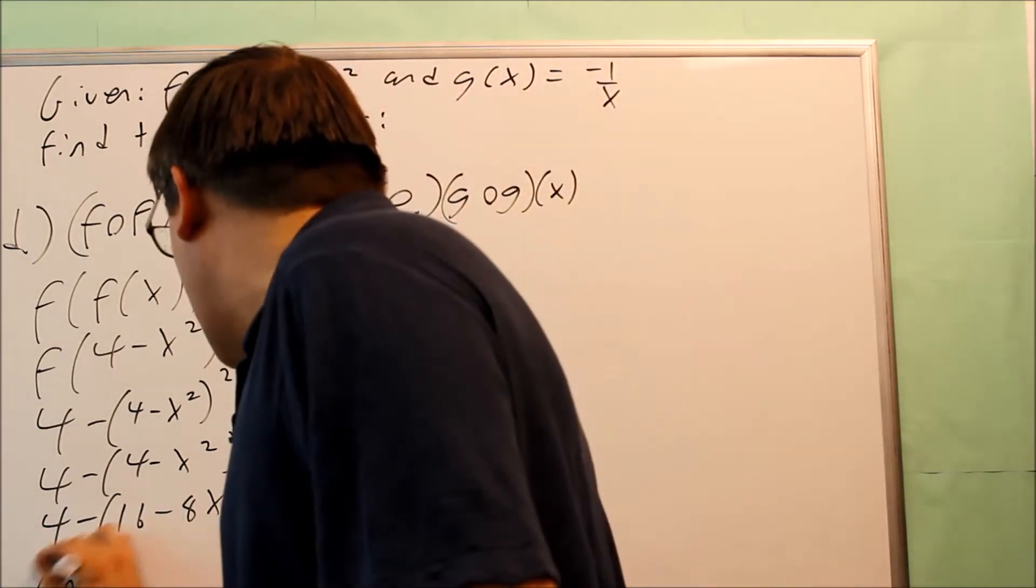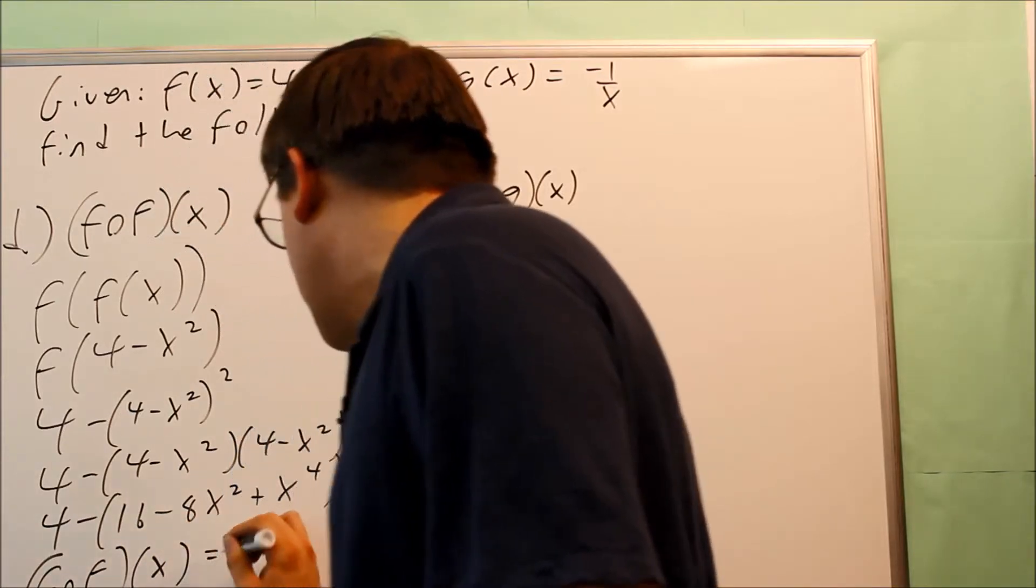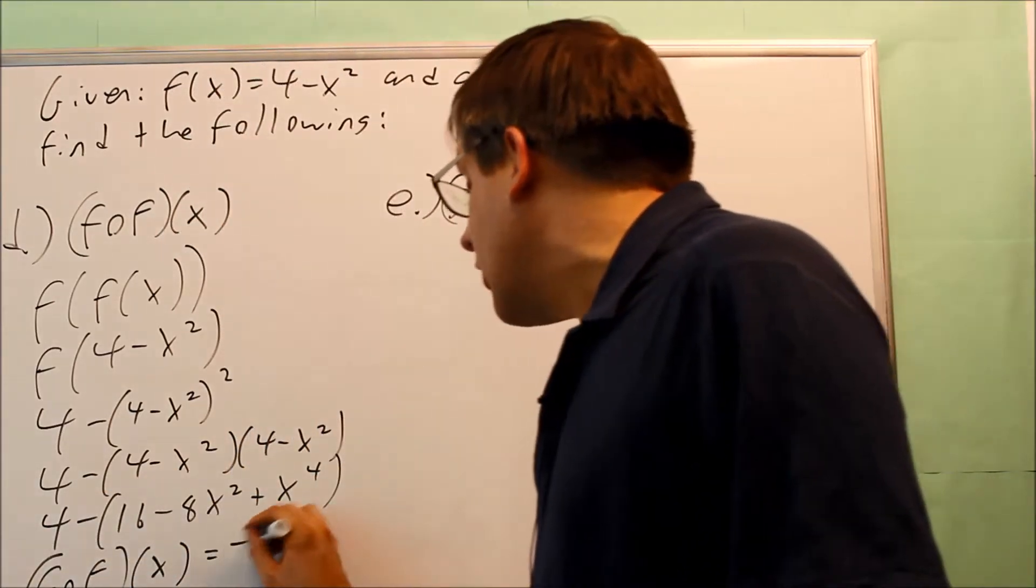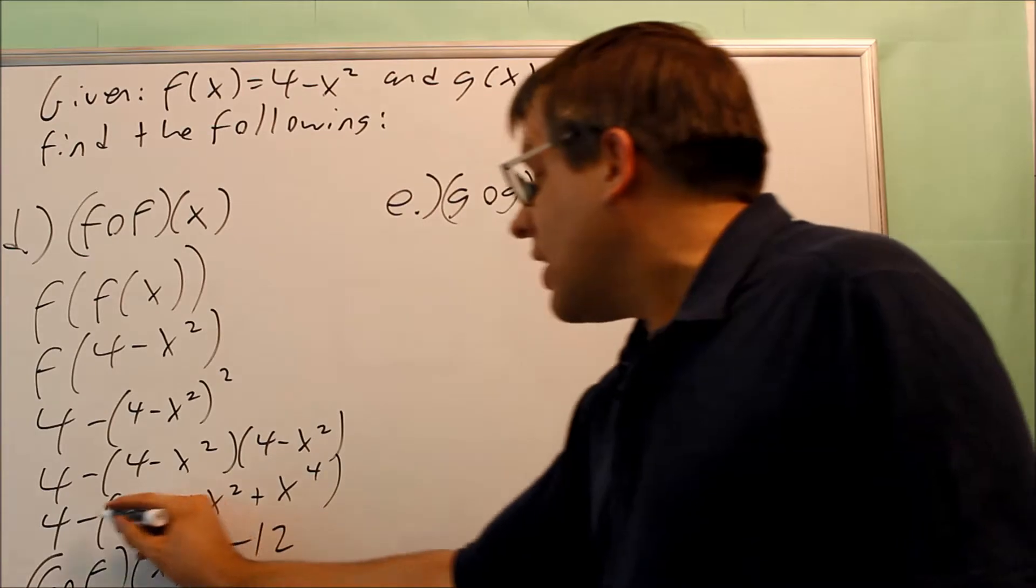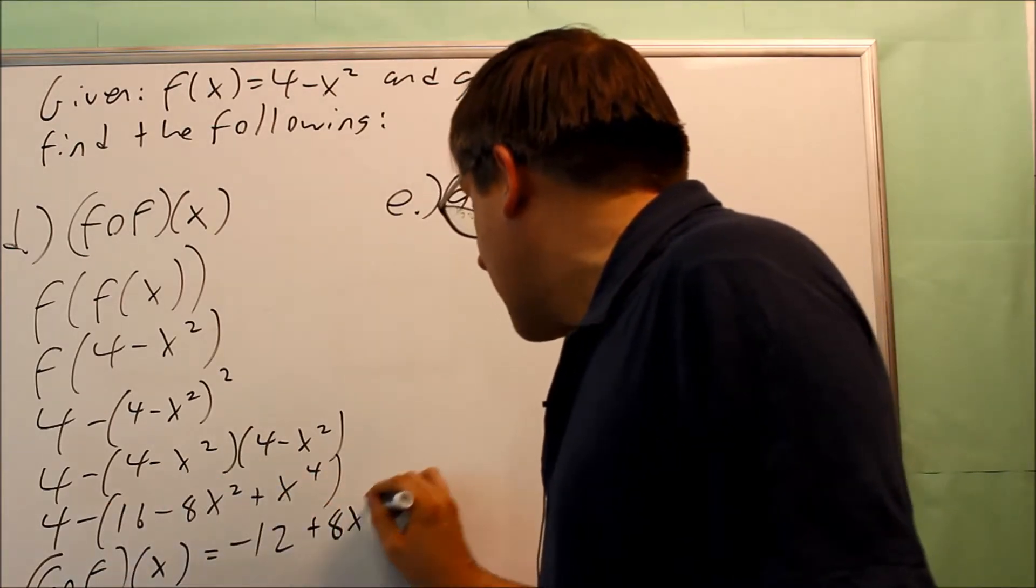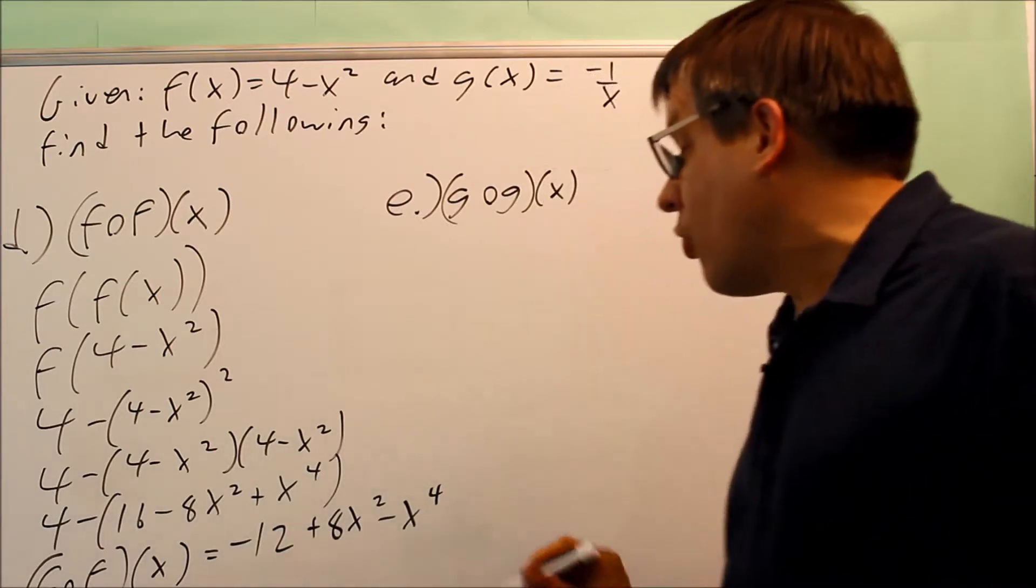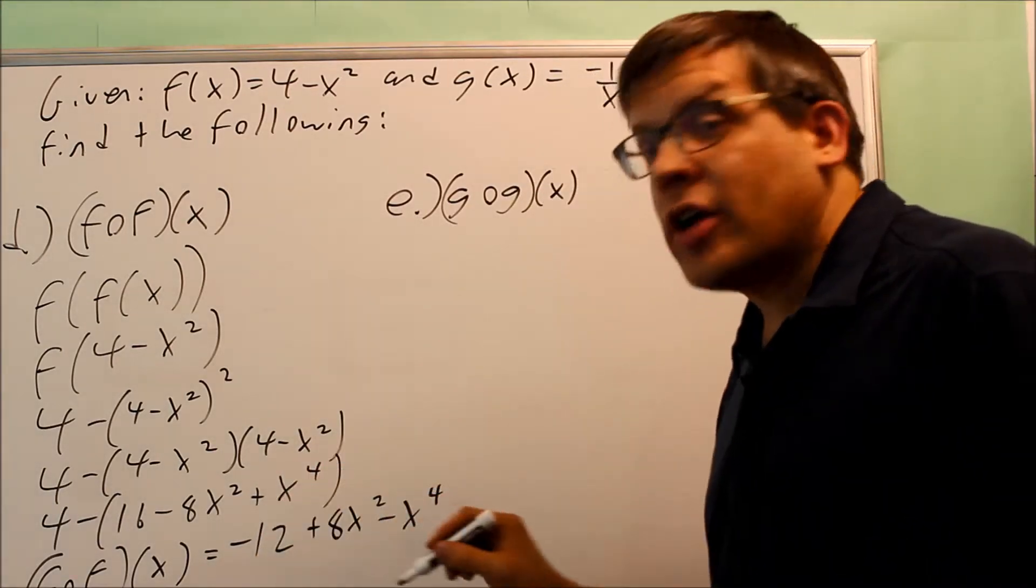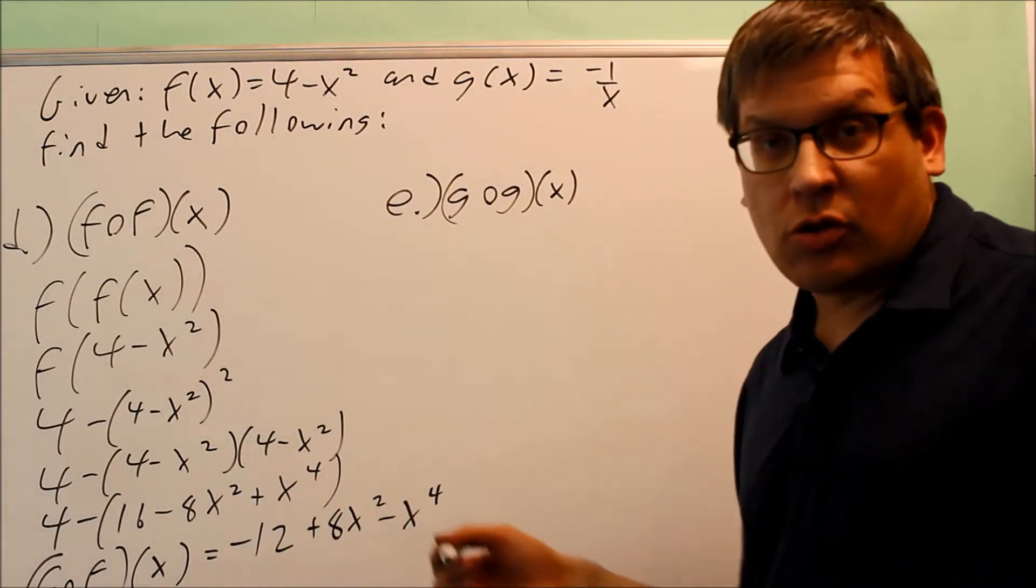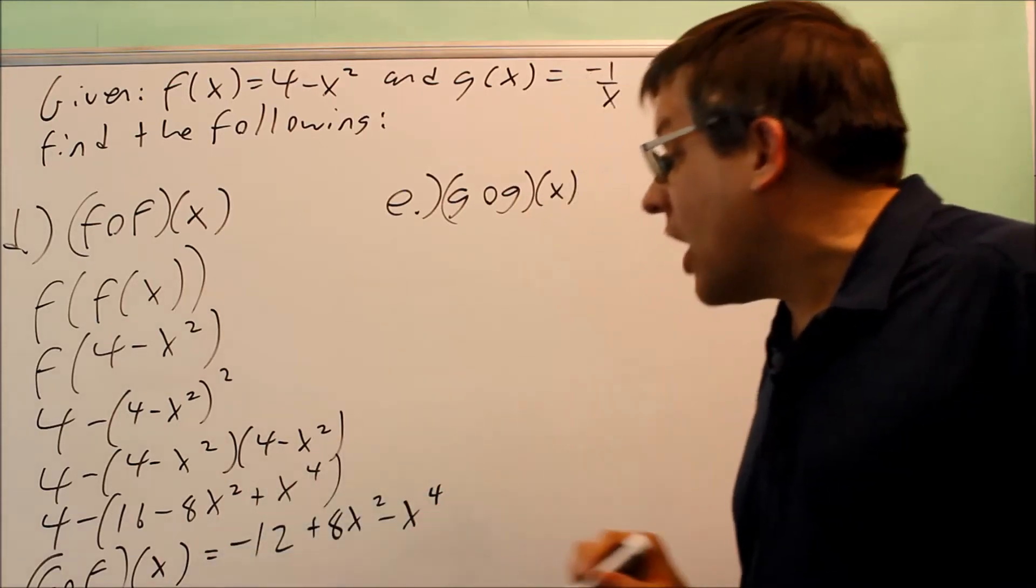So f of f of x, you're going to get, first of all, 4 minus 16 is going to give you negative 12. Negative, negative gives you plus 8x squared. And then negative here will give you negative x to the fourth. So this right here, if you want to rearrange it from highest to lowest powers, you could do that also. But this is going to be your f of f of x.